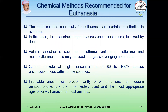Chemical methods are also recommended for euthanasia. The most suitable chemicals are certain anesthetics in overdose, which cause unconsciousness followed by death. Volatile anesthetics such as halothane, enflurane, isoflurane, and methoxyflurane should only be used in a gas scavenging apparatus. Carbon dioxide at high concentration — 80 to 100 percent — causes unconsciousness within a few seconds. Injectable anesthetics, predominantly barbiturates such as sodium phenobarbital, are most widely used and the most appropriate agents for euthanasia for most animals.